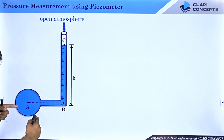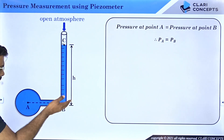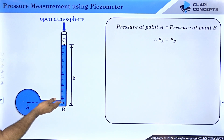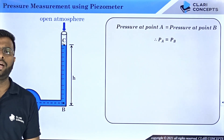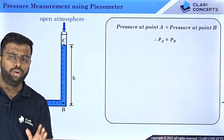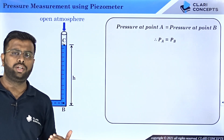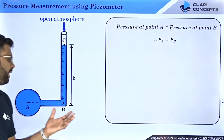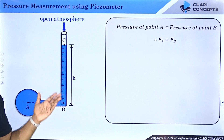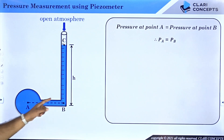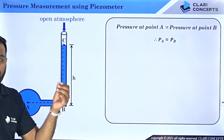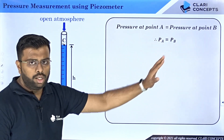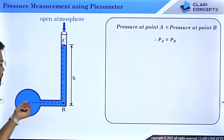Can I say that pressure at point A and B will be equal? Yes — because A and B lie on a common horizontal plane and can be connected by a continuous line being in the same constant-density fluid. So pressure at point A equals pressure at point B. If you have not viewed my previous lecture where I talked about pressure variation in a static fluid, please go to that lecture first, as this concept was taught there.